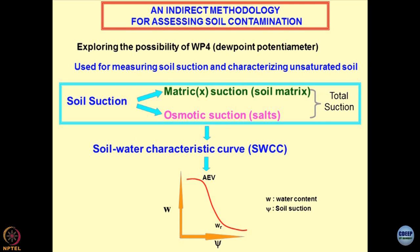The way to read this graph: the lesser the moisture content, the higher the suction value — extremely high. The more the moisture content in the soil, the lower the suction. Saturated soils will not show negative suction or negative pressures. This characteristic is a fundamental behavior of the soil.